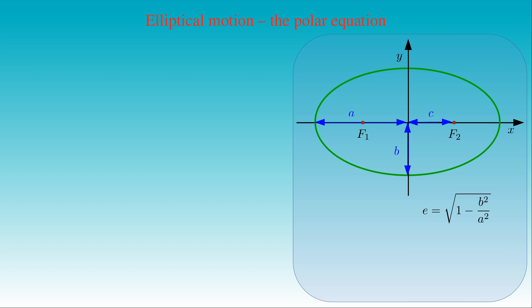That is, the plane curve is a circle, which shows that circles belong to a special class of ellipses. The eccentricity can be expressed as the ratio of the distance C of the fixed points from the center to the length A of the semi-major axis.